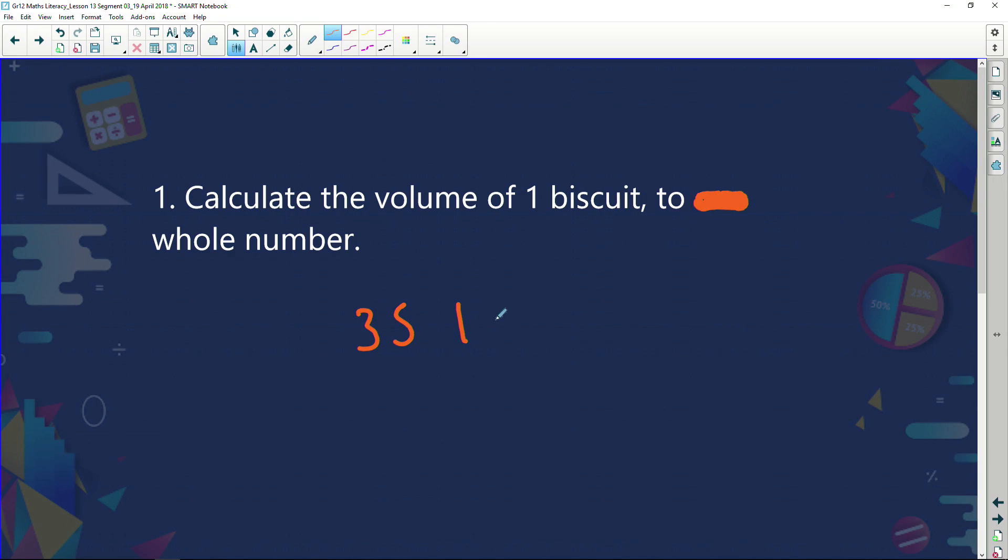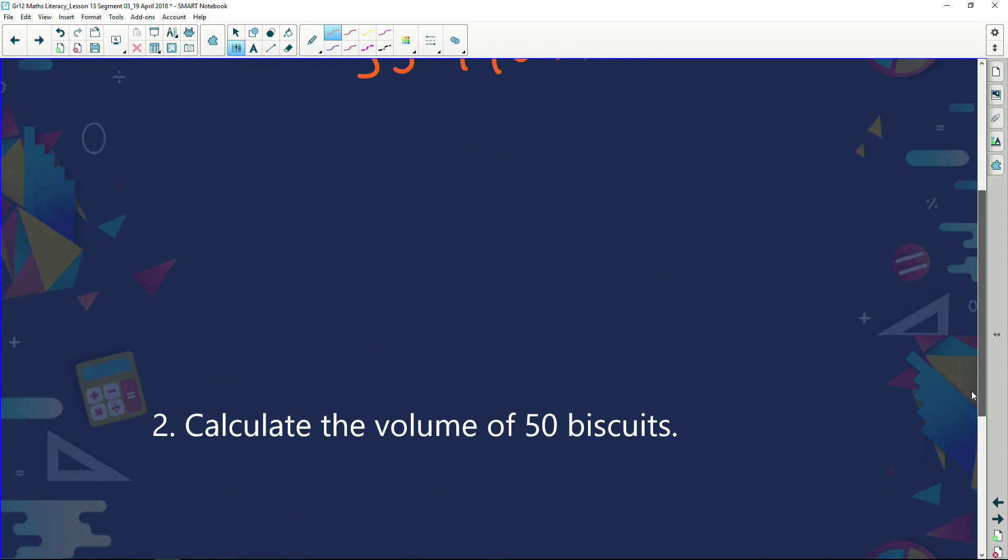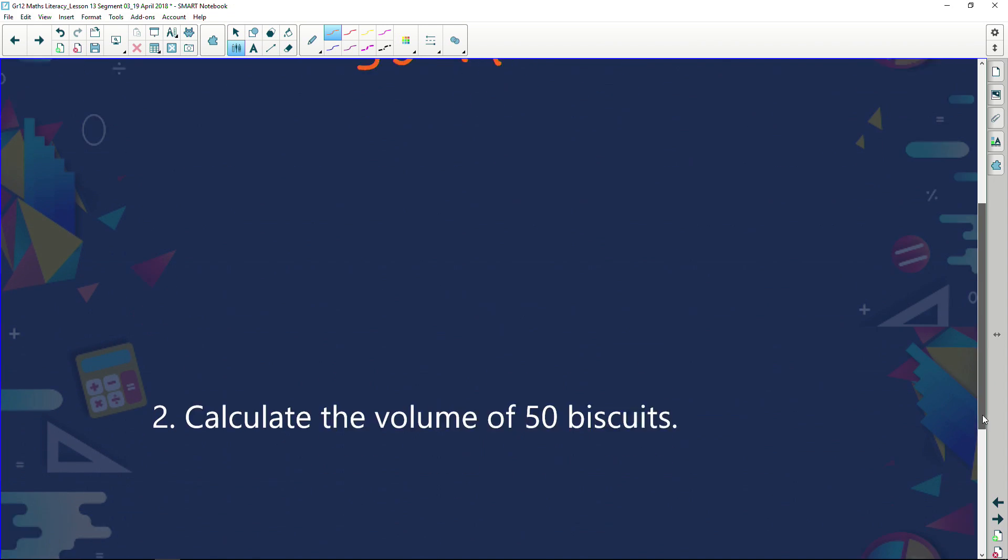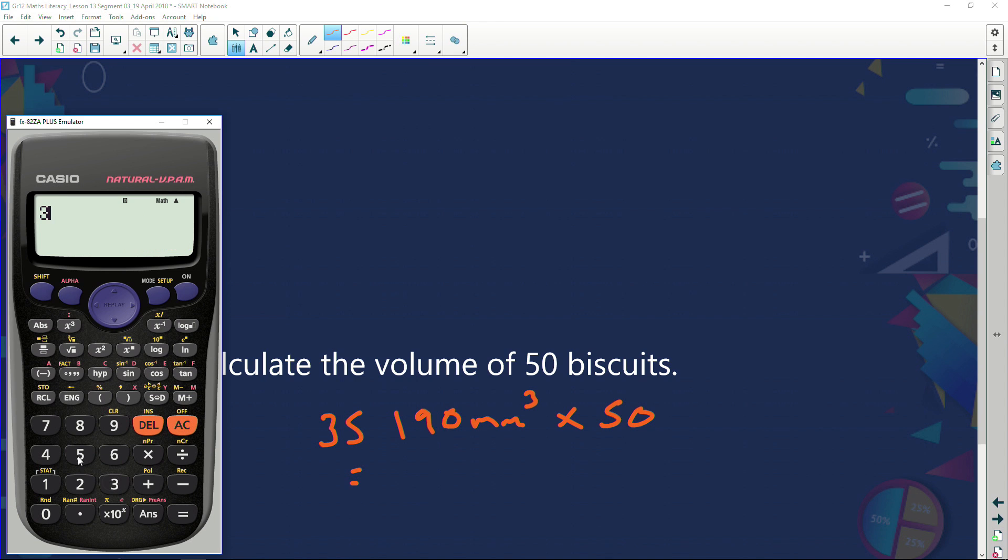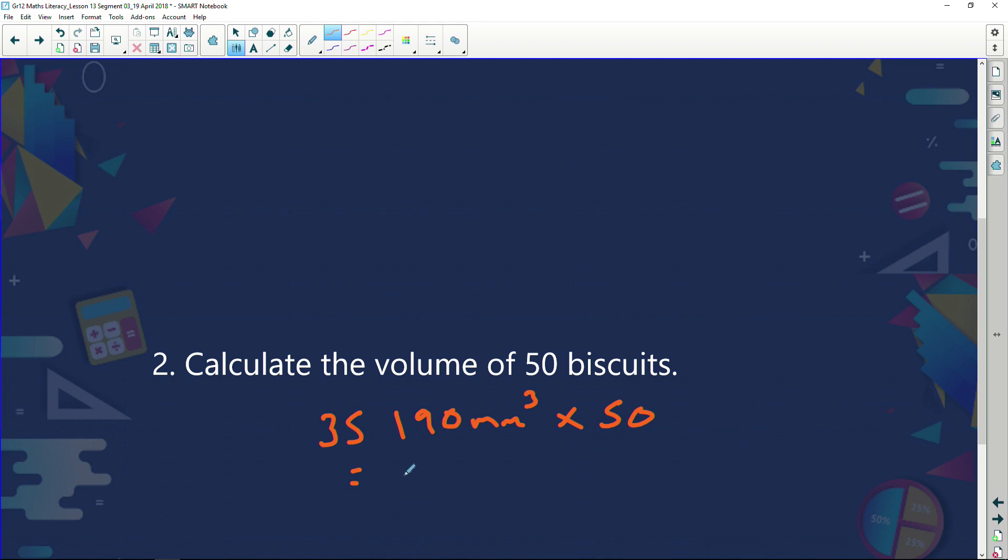So we said 35,190 millimeters cubed. Our next question says: calculate the volume of 50 biscuits. Well, if I've got 35,190 millimeters cubed, I'm just going to multiply that by 50 to get the total volume. So out it comes. 35,190, multiply that by 50. And I get an answer of 1,759,500 millimeters cubed.